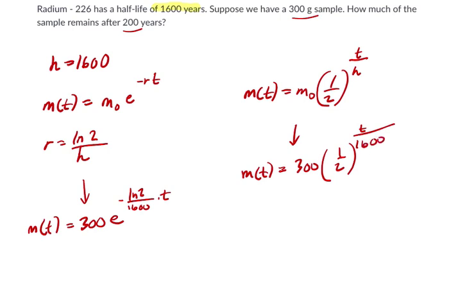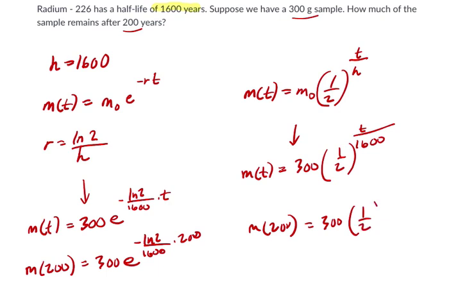So we want to know what happens after 200 years. So we plug in 200 for T. So M of 200 equals 300 times E to the negative LN of 2 over 1,600 times 200. And then over here, it's going to be M of 200 equals 300 times 1 half to the power of 200 over 1,600.